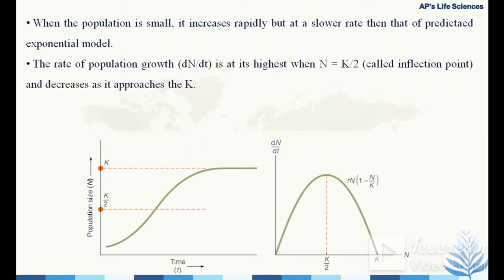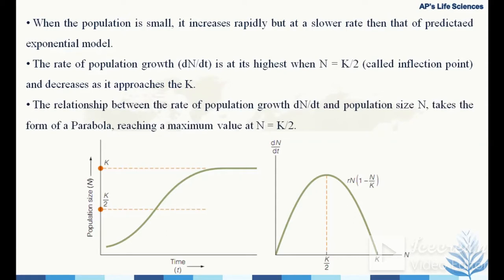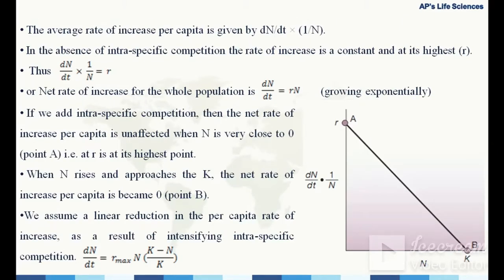The rate of population growth dn/dt is at its highest when N equals K/2 — also called the inflection point — and decreases as N approaches K. The highest population growth is achieved at half the carrying capacity. The relationship between dn/dt and population size N takes the form of a parabola, reaching its maximum at N = K/2.